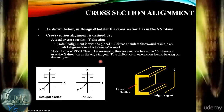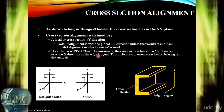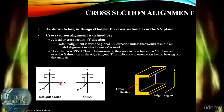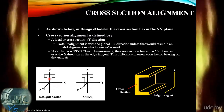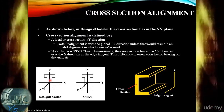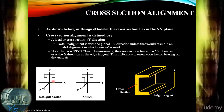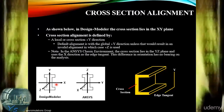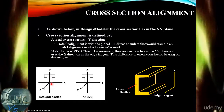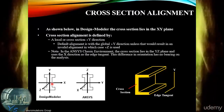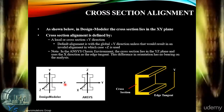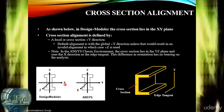In Design Modeler, the cross-section lies in the XY plane, as detailed here. This is the default plane in which the cross-section is defined, and the alignment is defined by a local or cross-section positive Y direction.